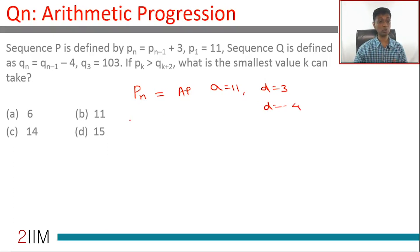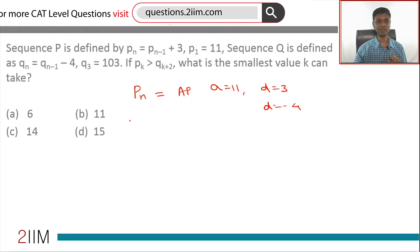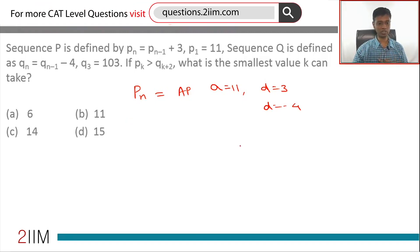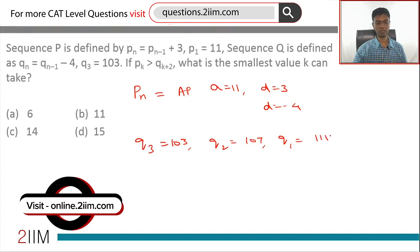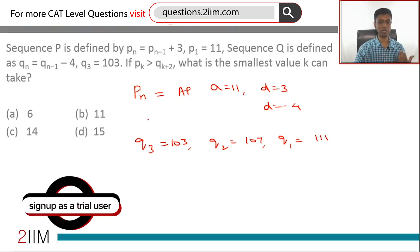Now q3 is 103, so working backwards: q2 should be 107, and q1 should be 111. Each term is the previous term minus 4, so the previous term is this term plus 4. Therefore, the first term of this arithmetic progression is 111.